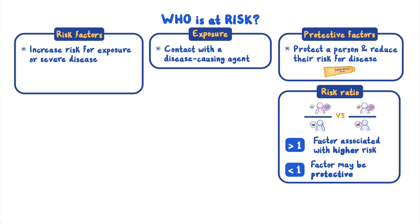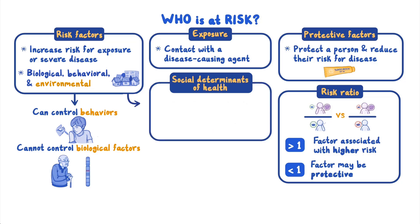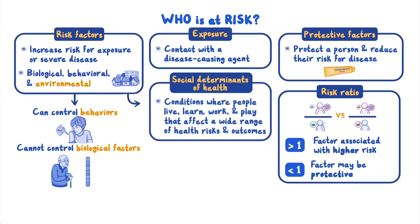As a recap: risk factors can be roughly categorized into three groups — biological, behavioral, and environmental. You have control over some risk factors like behaviors, but not others like biological factors such as age and genetics. External or environmental factors also influence health, and you may not have full control over some of these. These social determinants of health are the conditions in the places where people live, learn, work, and play that affect a wide range of health risks and outcomes. By applying what we know about social determinants of health, we not only improve individual and population health, but also move toward achieving health equity.